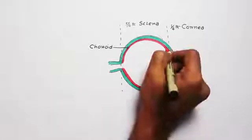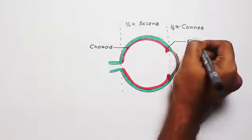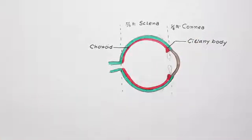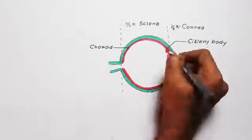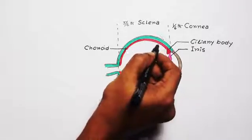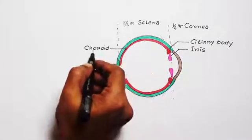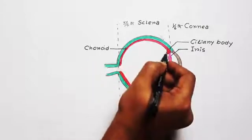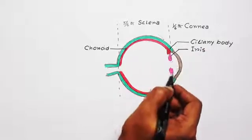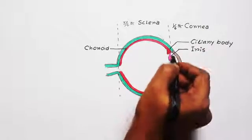Now, the anterior portion of this vascular layer becomes thickened. This thickened part is called ciliary body. And just in the middle of the ciliary body, there is a vascular diaphragm called iris. So the posterior-most part of the middle layer is choroid, and the anterior triangle-shaped thickened area is the ciliary body, with the iris in the middle.